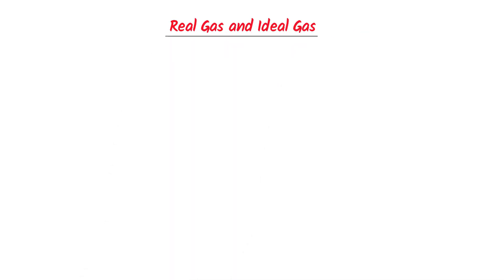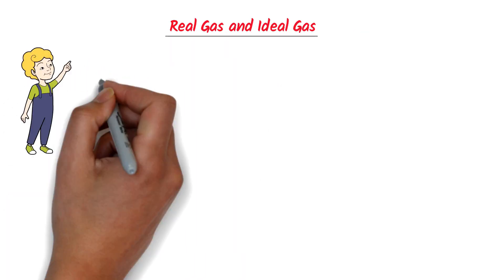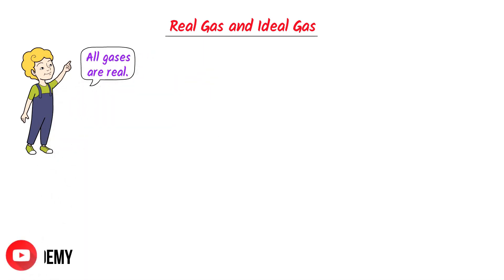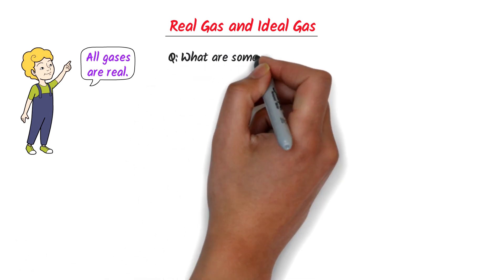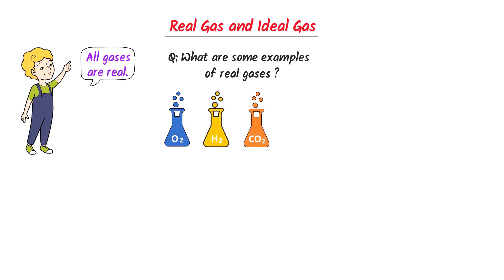Real gas and ideal gas. The first point you should note is that all gases in the universe are real. Now, two important questions. Firstly, what are some examples of real gases? Well, the examples of real gases are oxygen gas, hydrogen gas, carbon dioxide gas, helium gas, etc.